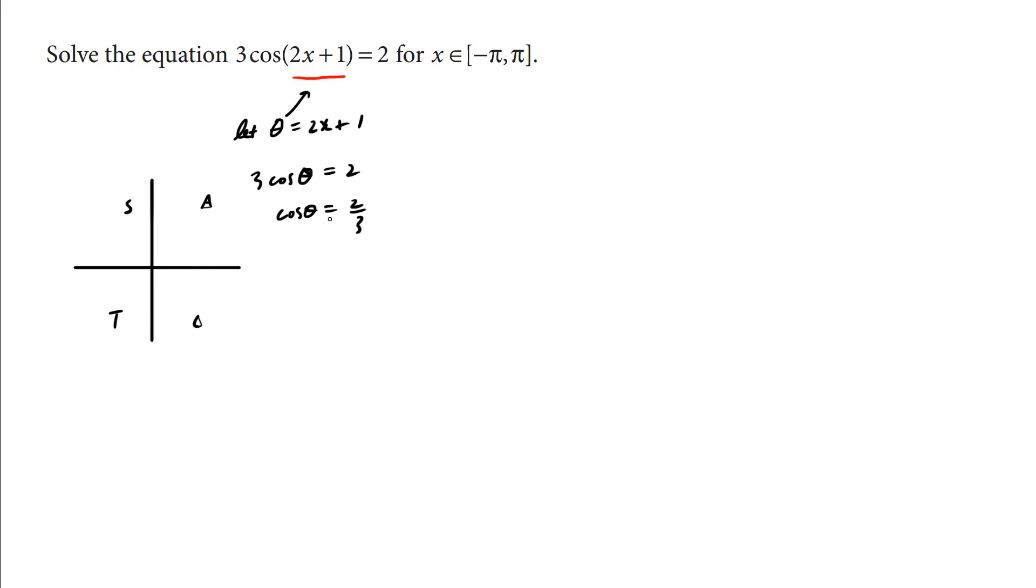How do we do it? ASTC. This is positive. Cosine is positive here and here. You hit cosine inverse of 2 thirds in radian mode. We get 0.841 radians, which is approximately 48 degrees if you multiply by 57.